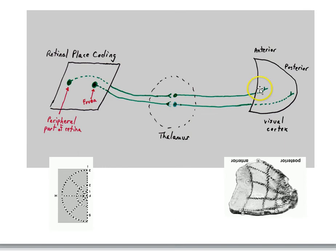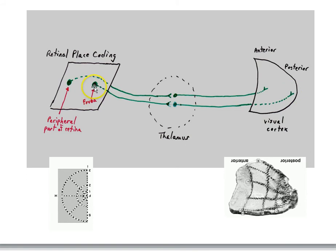There's a mapping such that the activity of cells in area 17 is correlated to activity of the retinal inputs, in such a way that there's a preservation of the spatial layout. Cells here, when they're active, represent activity on the fovea. When cells over here in the visual cortex are active, that means there's activity in the peripheral part of the retina. So we can think of this as a one-to-one mapping — the visual cortex is a kind of map of the retina.